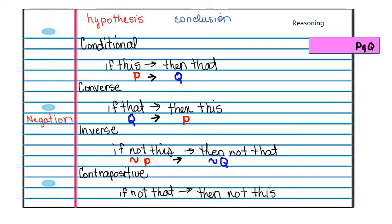And then the contrapositive is just the opposite of what the inverse is. And it pretty much says if not Q then not P.